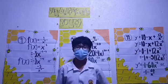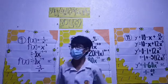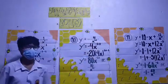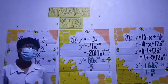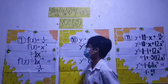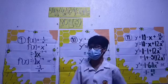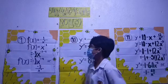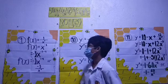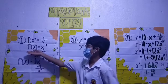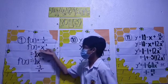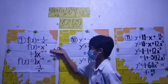Mr. Rogan assigned me to answer items number 9, 10, and 11. For item number 9, f of x is equals to 1 over x cubed. Since our f of x is in a fraction form, we will transform it. So f prime of x is equals to x raised to negative 3.